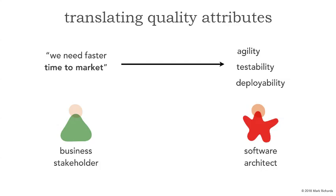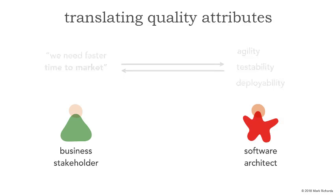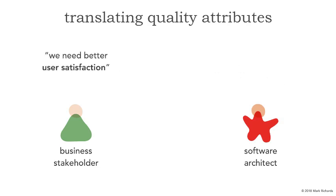These three together — agility, testability, and deployability — really translate to time to market, and can be communicated back to a business stakeholder by saying we are supporting high levels of faster time to market based on these three ilities. Here's another very common one: I need better user satisfaction. Architecturally, can we control user satisfaction? The answer is yes. There are some elements of user satisfaction we can address. For example, this really translates into high levels of performance — the faster an application, generally the happier users will be.